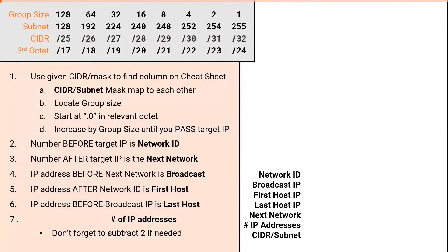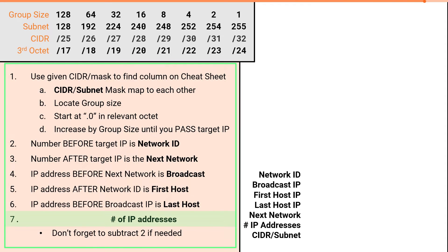The process for solving subnetting problems in the third octet is largely the same as what we've been doing. Notice the seven steps we've used in prior videos remains mostly unchanged. The one exception is solving for the number of IPs — we will show you how that works shortly.